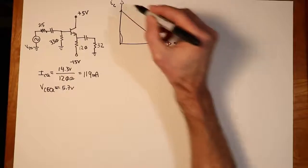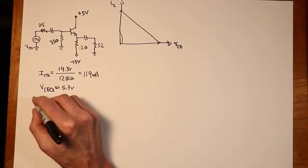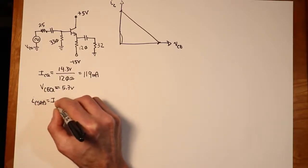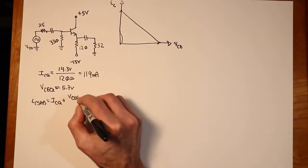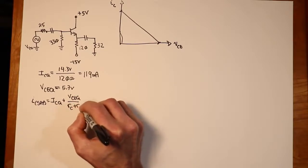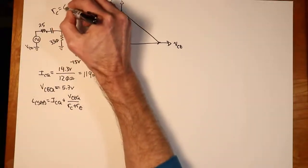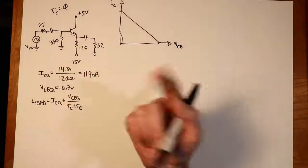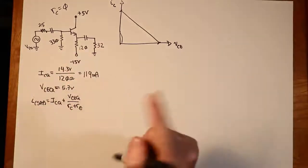The other thing we need to do is get the saturation current and the cutoff voltage. So we developed some equations last time. We said that IC sat is equal to ICQ plus VCEQ divided by RC plus RE. Now in this circuit there is no collector resistor. So we can just say that's 0. This is just a follower.